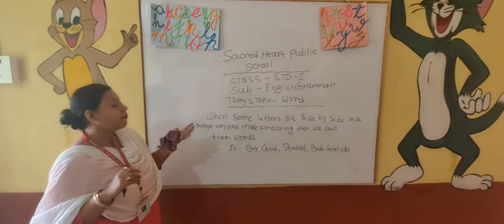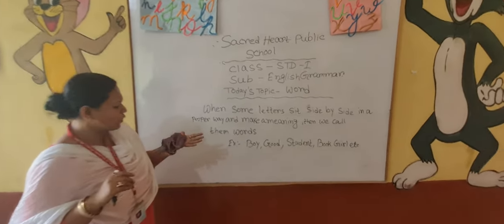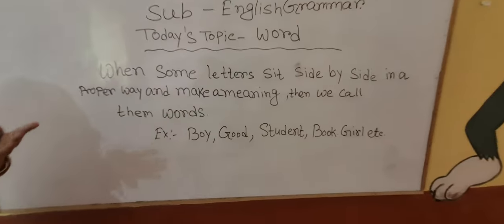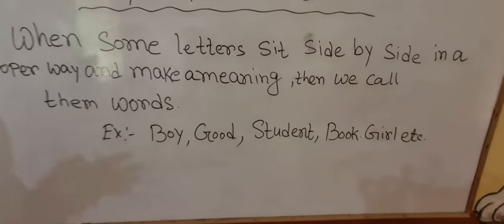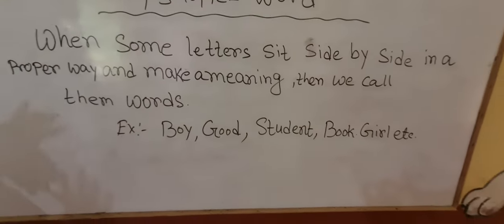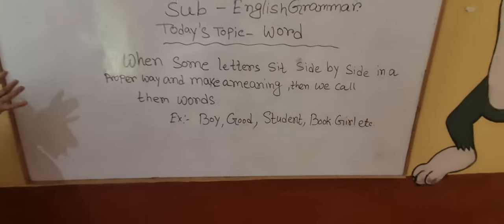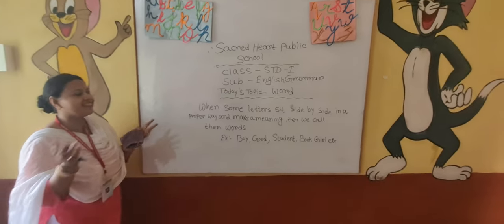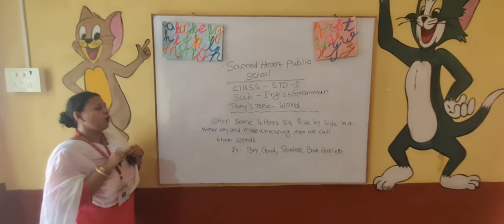The examples are: book, good, student, book, girls, tree, water — various words. There are so many words in the world.